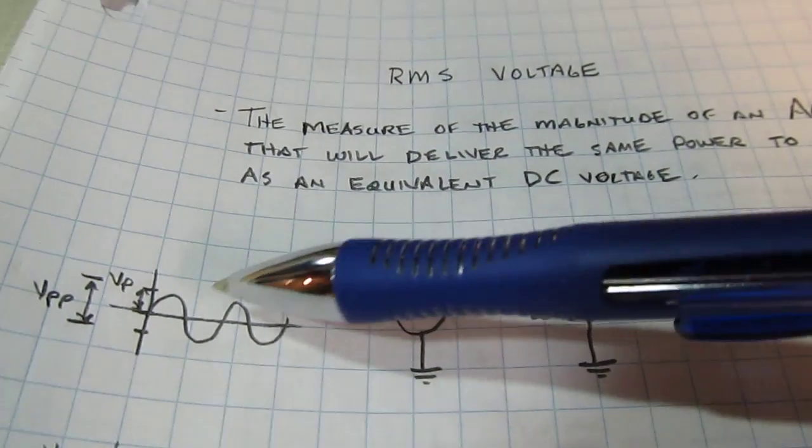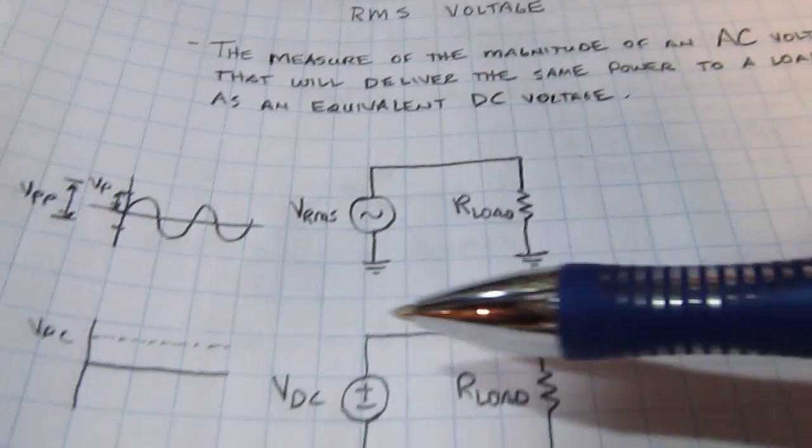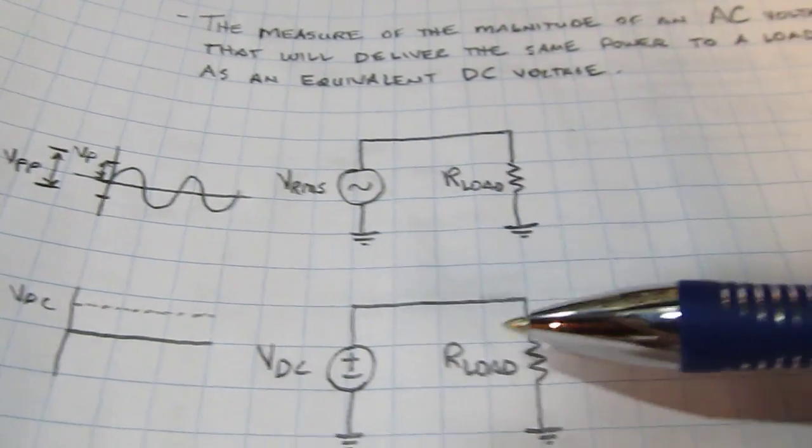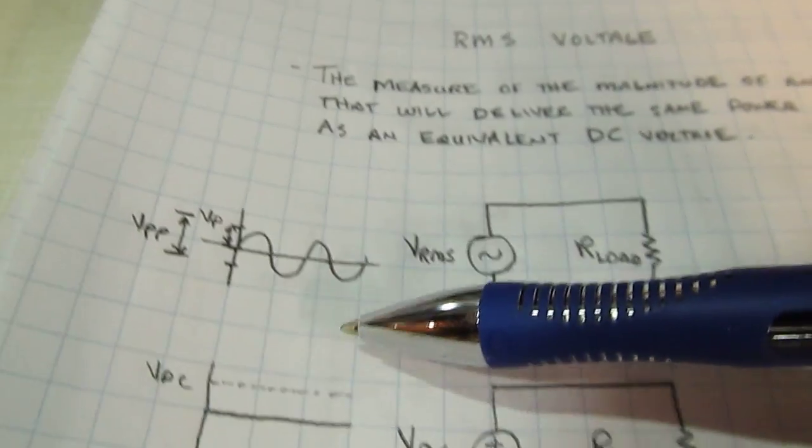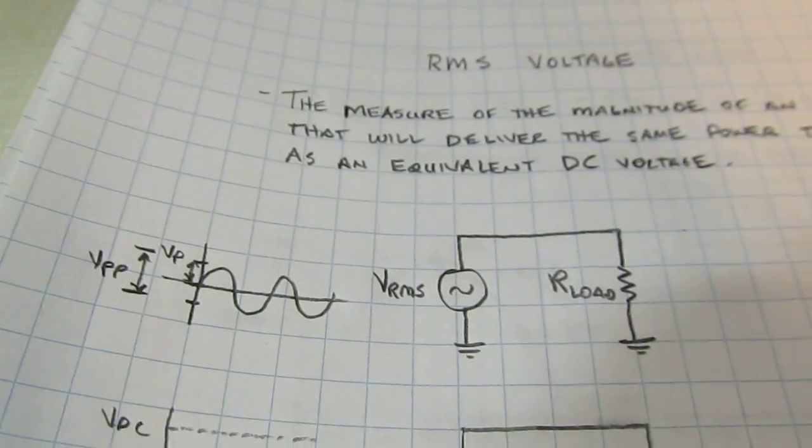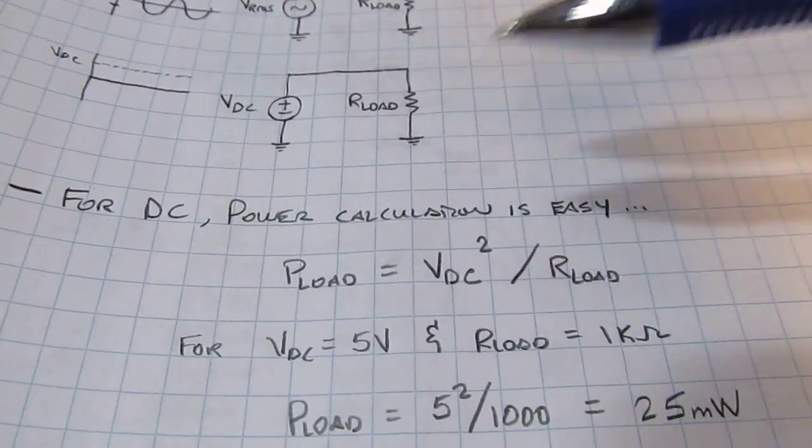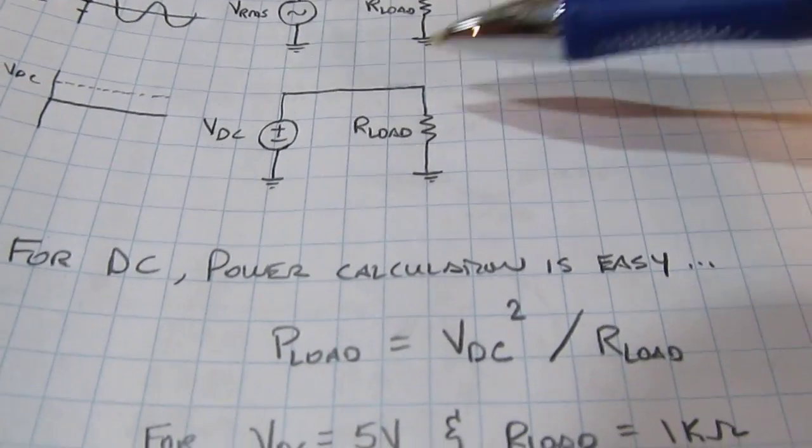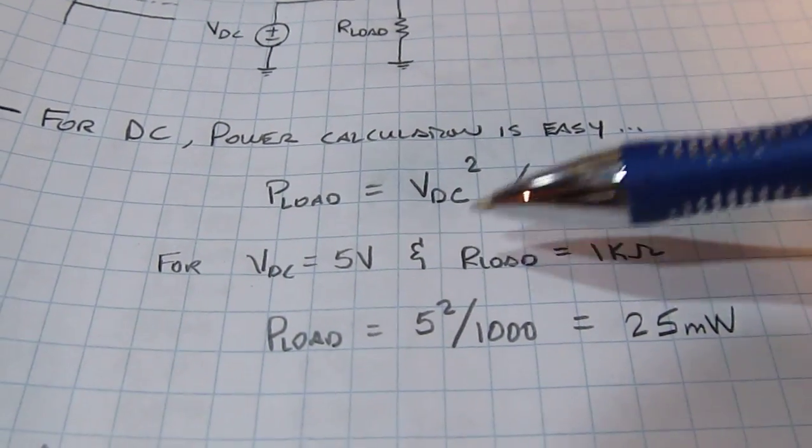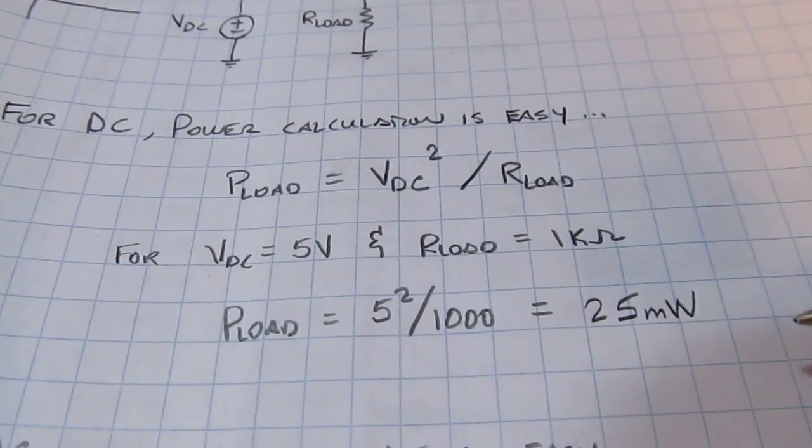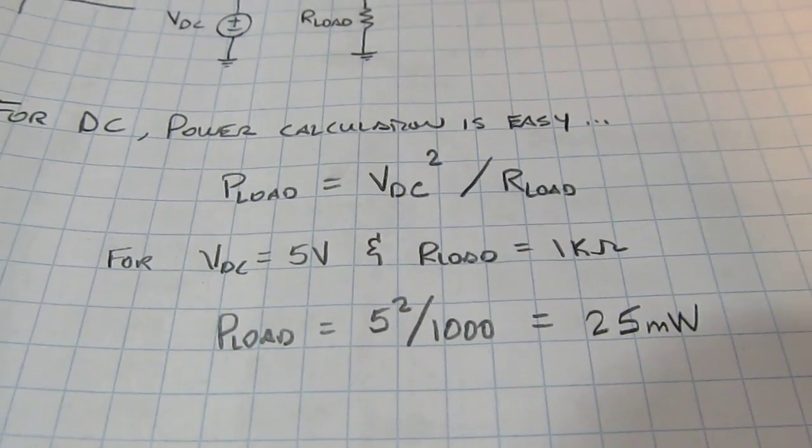So what we're talking about is if I have an AC voltage here applied to the load, what value of DC would deliver that same power to that load? That DC level would be equal to the RMS level of the peak-to-peak voltage. From a DC standpoint, calculating power delivered to a load is very simple. Voltage squared divided by the load resistor. If it was 5 volts and a thousand ohms, we'd have 25 milliwatts there. Pretty simple calculation.